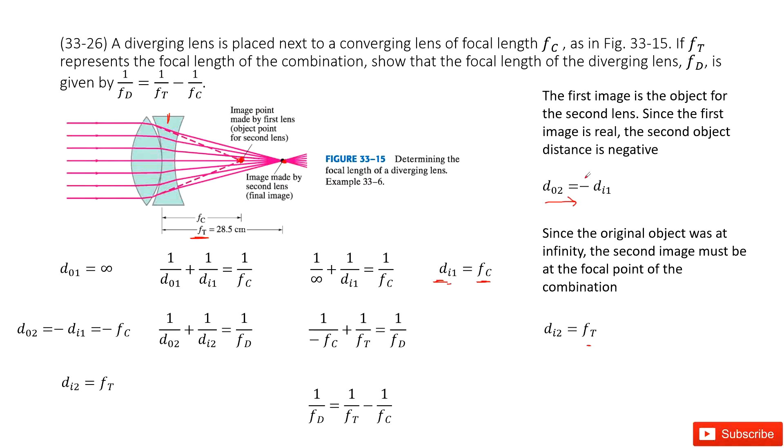Then we can write down the simple lens equation for second lens. This is 1 over Do2. This is object distance for 2. And Di2 to Fd. This one is given. This one we need to know. We don't know yet. And this one we don't know yet, but come to there. We can see...